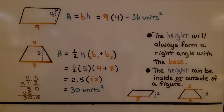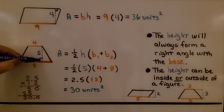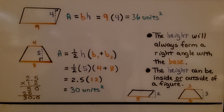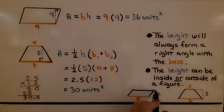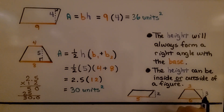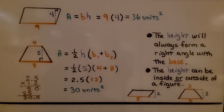The height will always form a right angle with the base. The height can be inside or outside of a figure. We might see a parallelogram where the height is on the outside shown with dotted lines, or for a trapezoid the height might also appear on the outside.